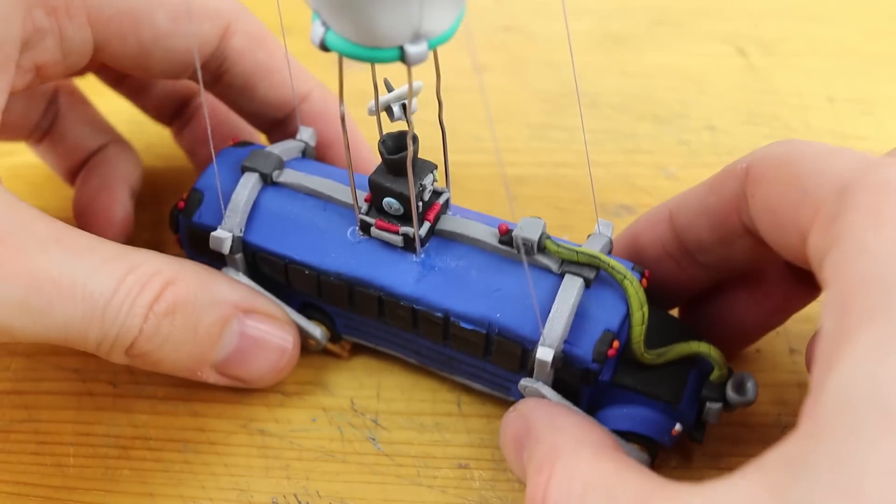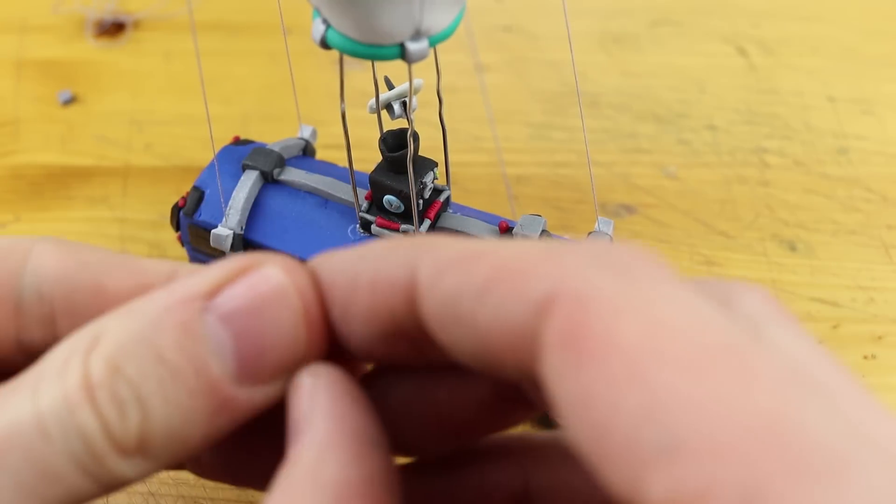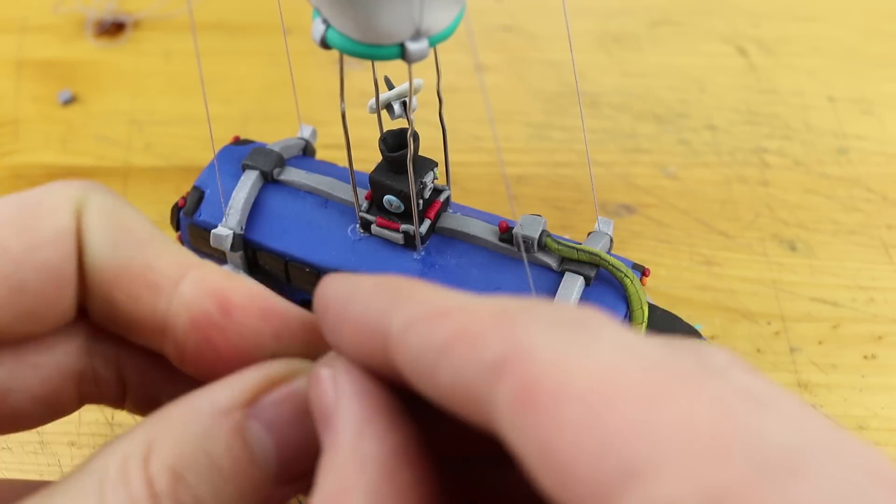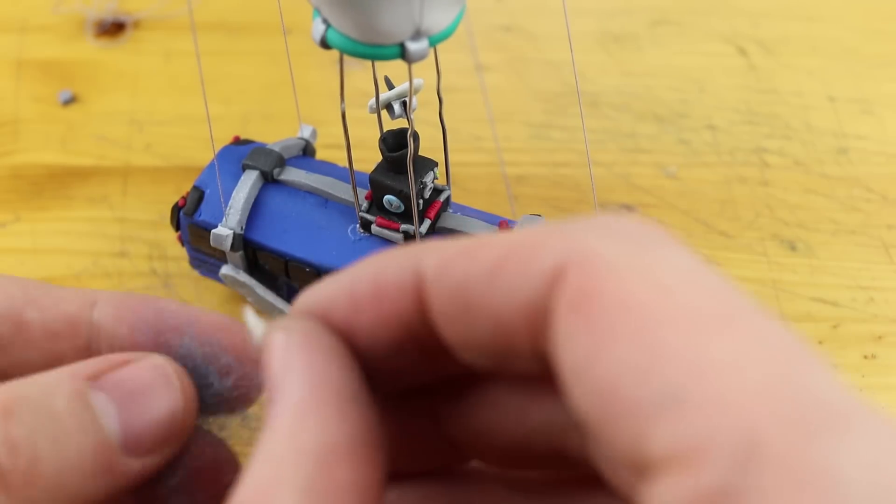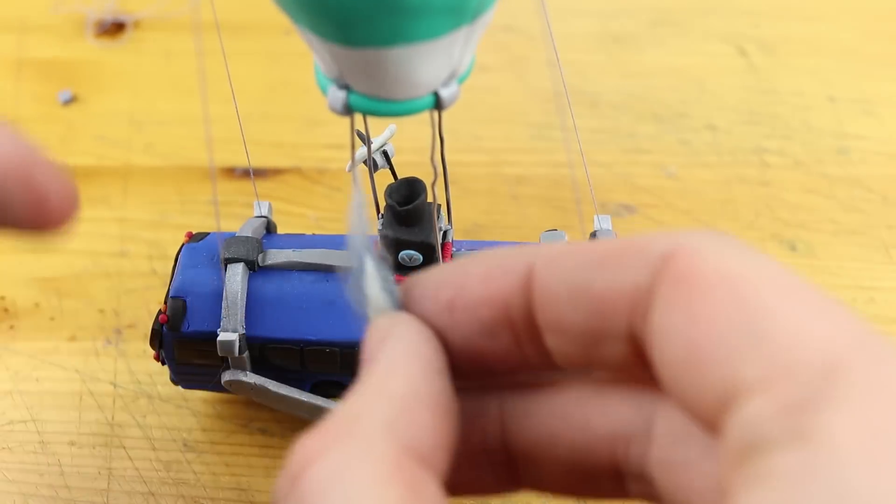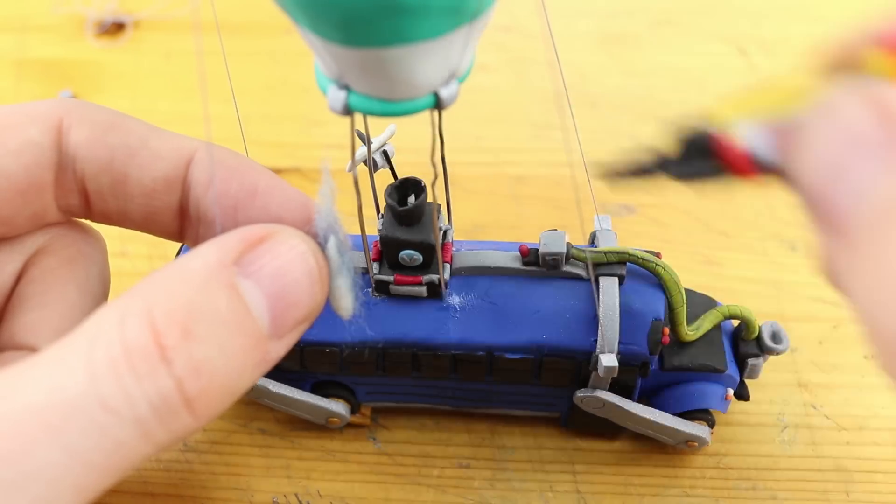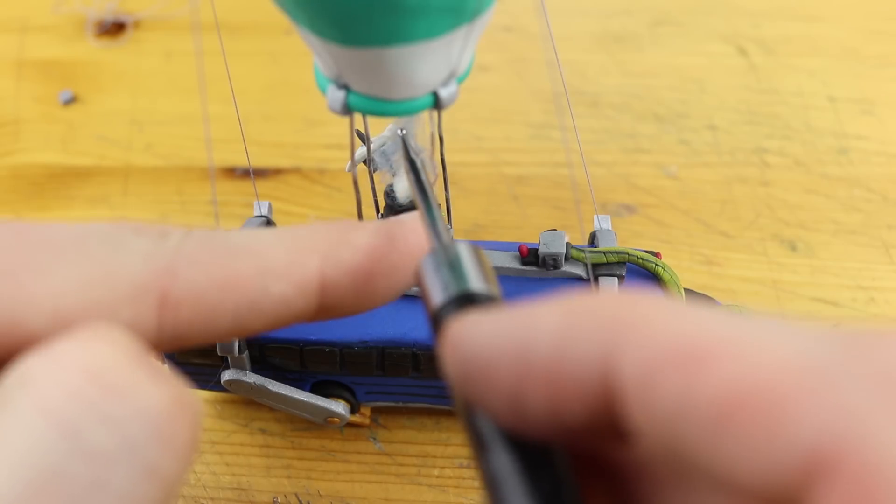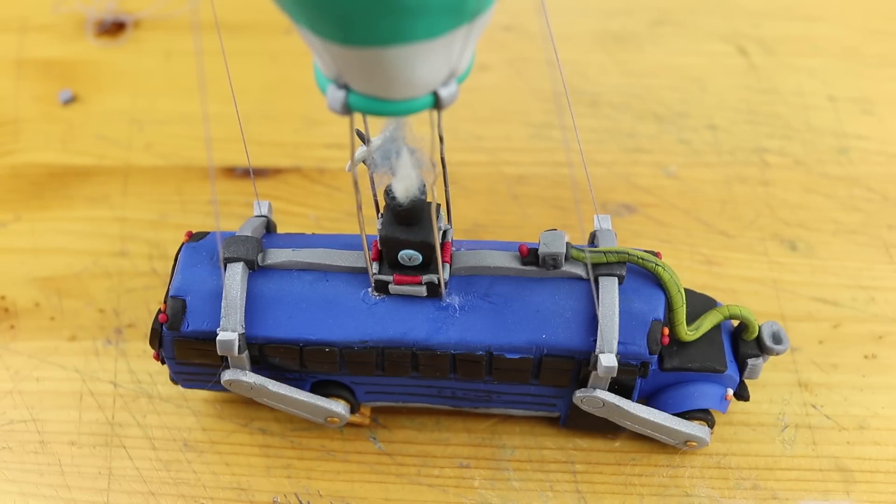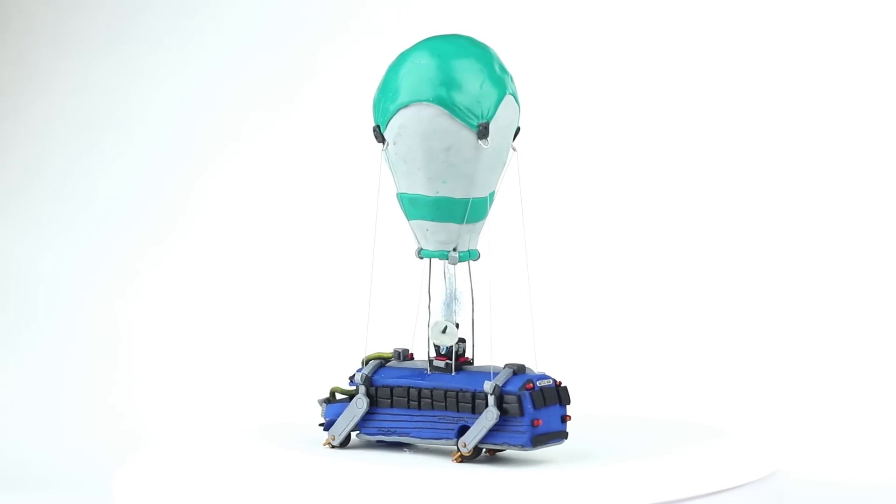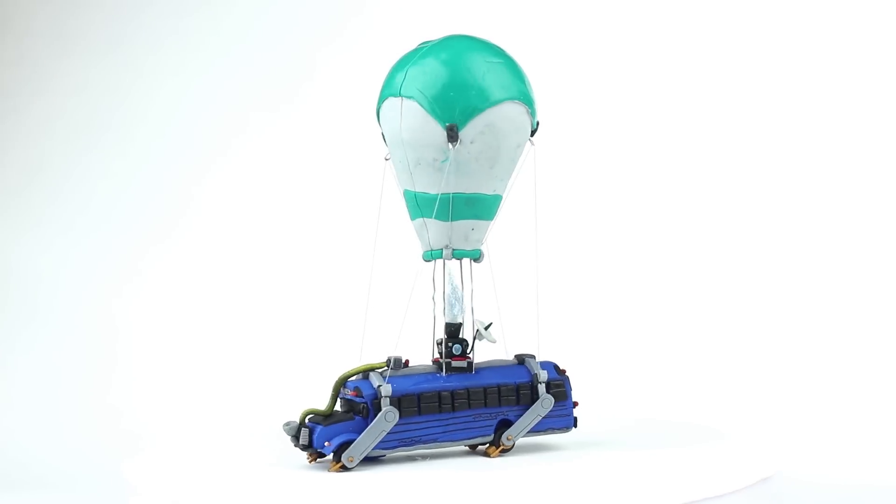Now some more transparent polish for the balloon for a shiny look and this is the Bunsen burner I was looking forward to create all the time. It's just wool, white and blue wool and we will place it in the hole and I guess that's it! The battle bus from Fortnite!